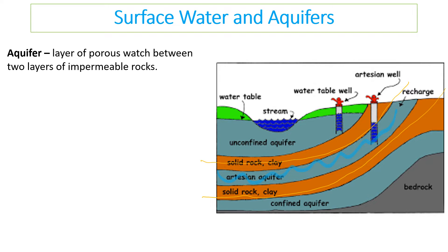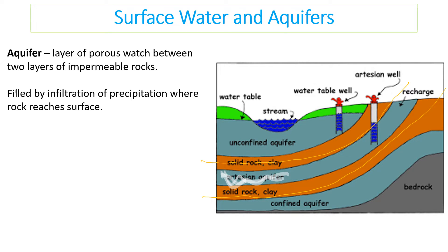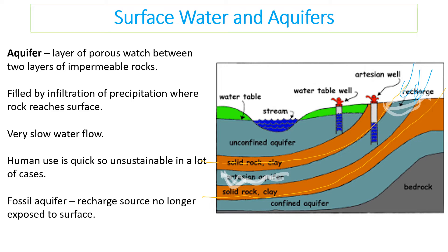In the diagram, the impermeable rock layers sit above and below, with water stored in the porous rock between them. The aquifer is recharged by infiltration during rainfall, but only where the porous rock reaches the surface — which is a very small area. This means recharging is often quite slow, while humans often extract water quickly, so the aquifer can become depleted before it has a chance to recharge.